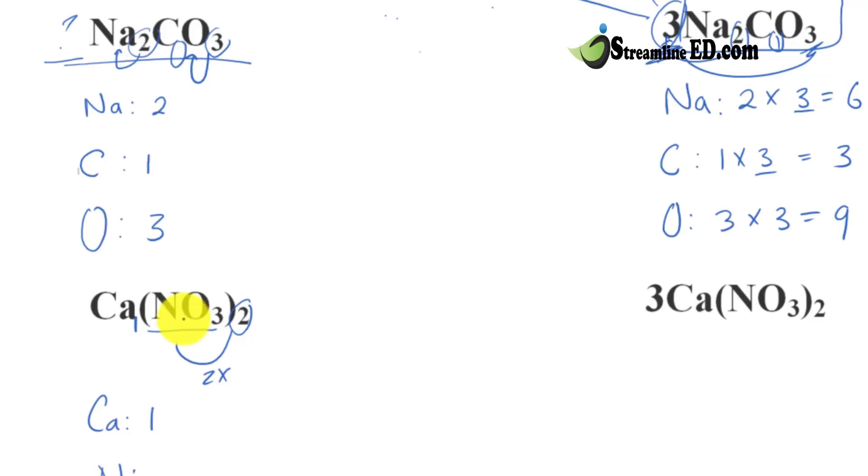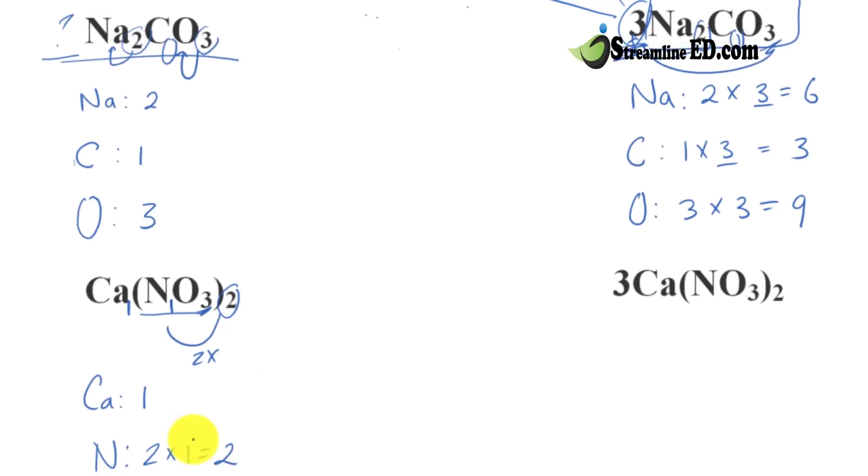And then for nitrogen, it gets a little bit tricky, because in here there's 1 nitrogen, but that 2 right there tells you there are 2 of it. So, we have 2 times 1 equal to 2. There are 3 oxygen in these polyatomic ions, but there are 2 of the polyatomic ions. So, we have 3 times 2, or in this case, 2 times 3 equal to 6. And that is how the parentheses has an impact on the number of atoms.